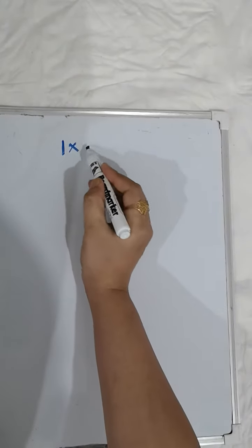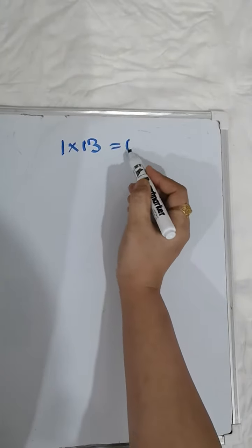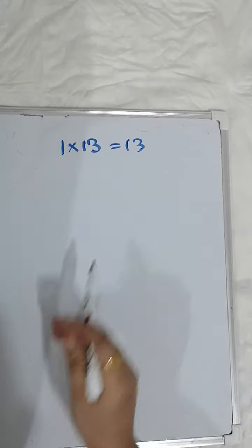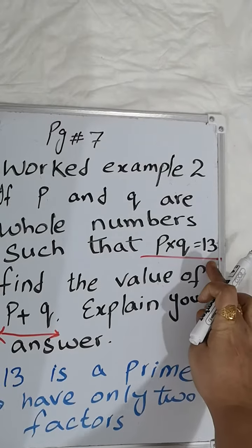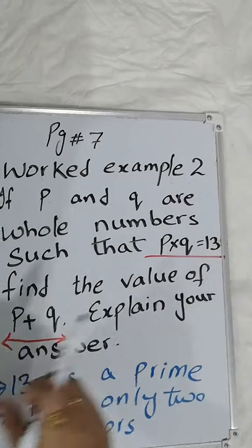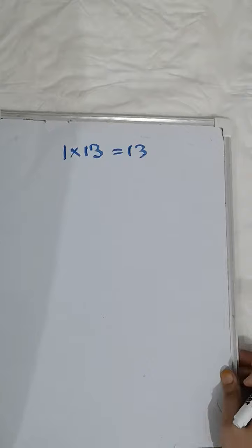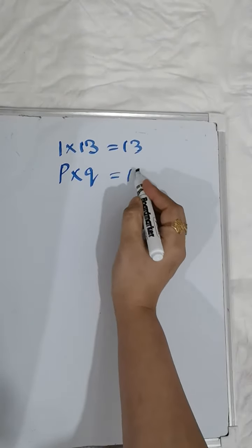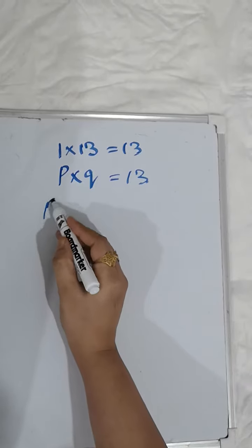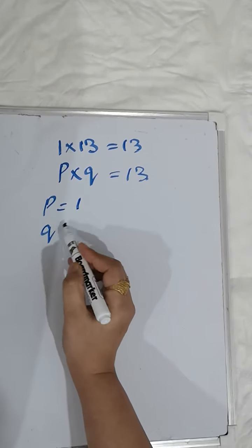One multiply 13 equals 13, and in the question it is given P multiply Q equals 13. So we can write P multiply Q equals 13. This means P equals 1 and Q equals 13.